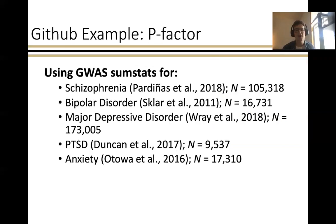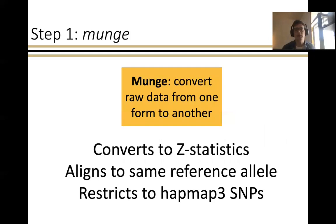For this example, we're going to use the five psychiatric traits from the GitHub example for the P factor across schizophrenia, bipolar disorder, major depressive disorder, PTSD, and anxiety. These are all publicly available summary statistics that are directly available for download.